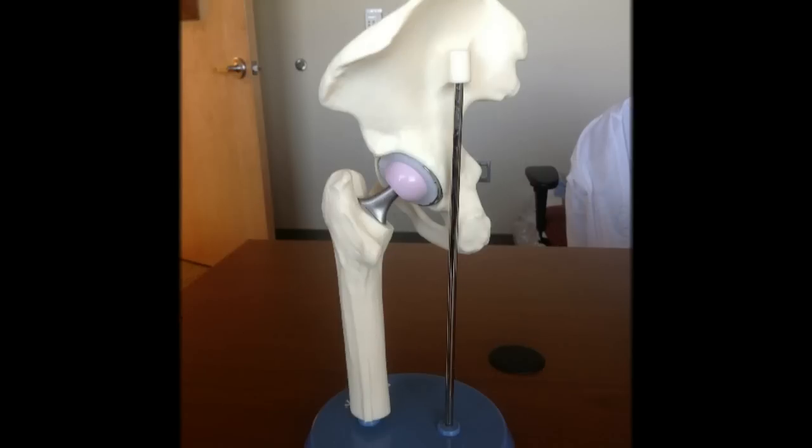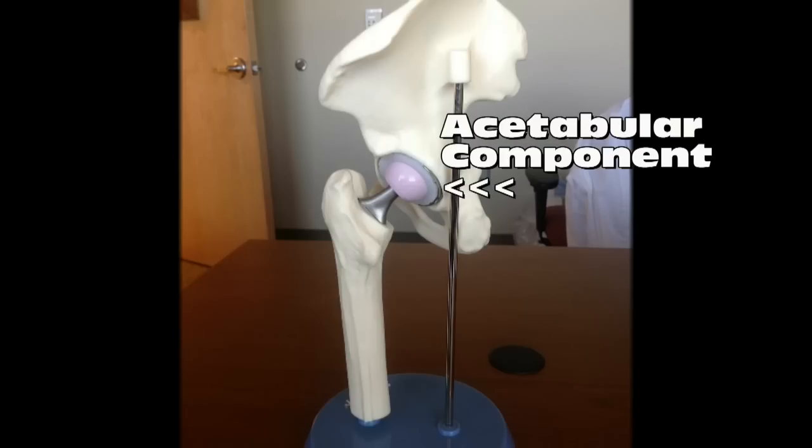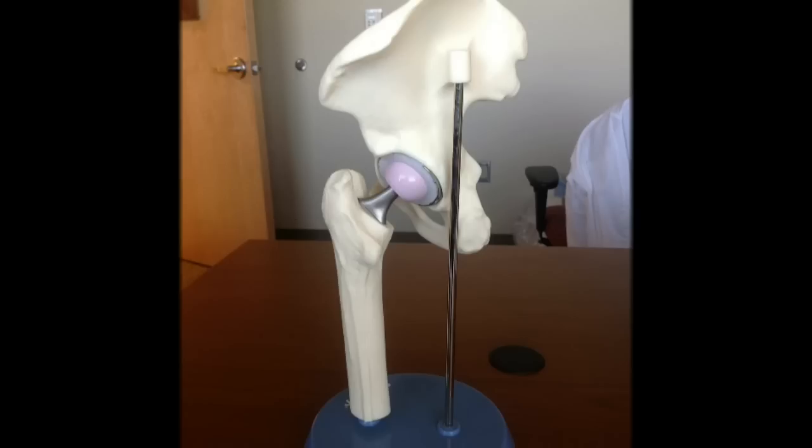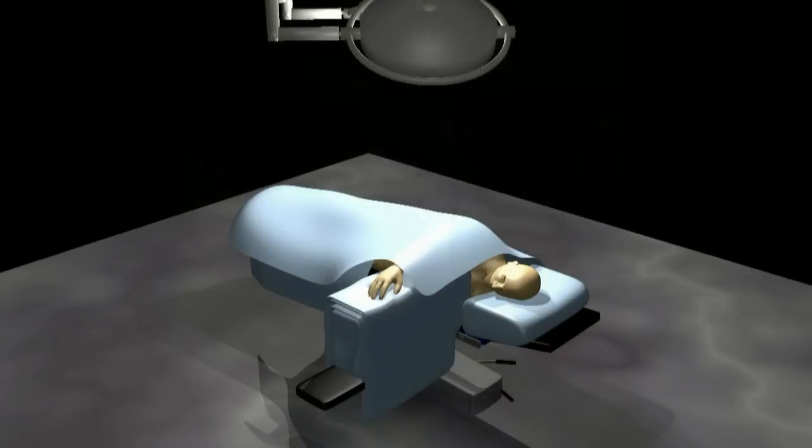Hip replacement surgery involves replacing the worn out joint surfaces with metal implants. Usually the implants include an acetabular component (the hip socket), a femoral component, and a plastic liner. The patient is positioned on the operating room table.